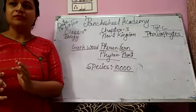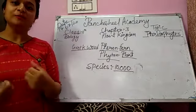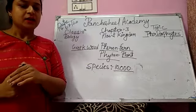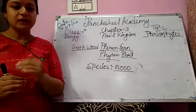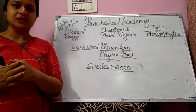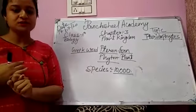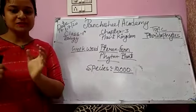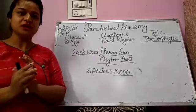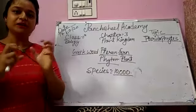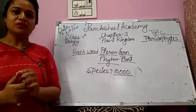Every species has its own type of reproduction and own type of life cycle. If we talk about the life cycle of Pteridophyta, generally alternate generations are seen. There are two types — heterogeneous types. That means their morphology is different and they reproduce by the process of heterogamy.